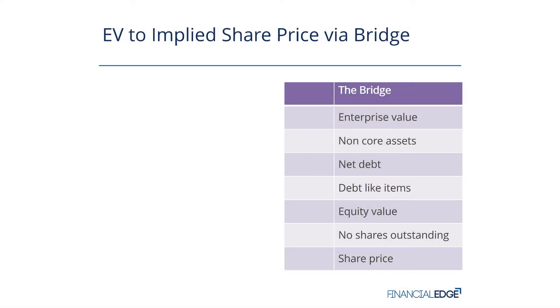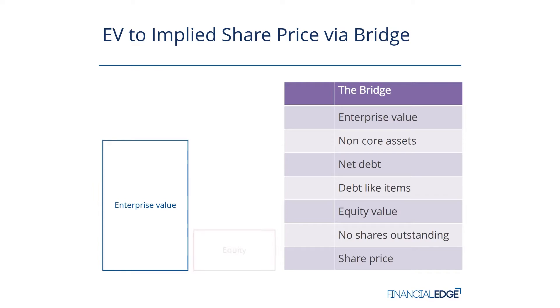Once we've calculated our EV, or enterprise value, we then want to get to our implied share price via the EV equity bridge. There's our EV, there's our equity value. So how do we do this?